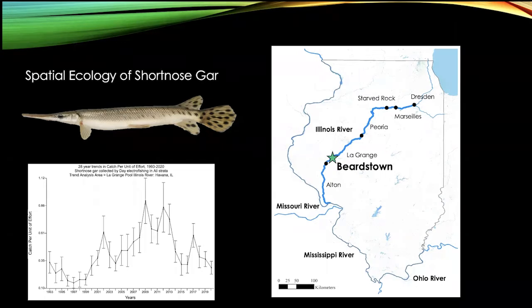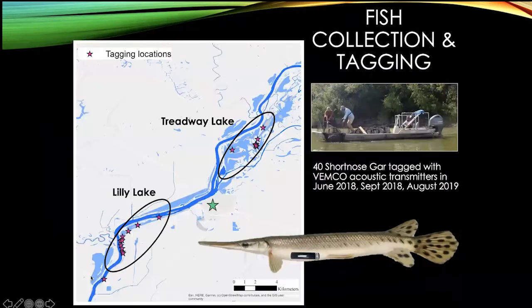To understand size structure and how anglers are capturing fish, it's important to understand population structure and the appropriate spatial scale for management. Are these isolated populations or a large panmictic population? Our acoustic telemetry study focused on the LaGrange reach between Beardstown and Havana, Illinois. We internally implanted acoustic telemetry tags in 40 gar in June, August, and September of 2018 and 2019 at two backwater complexes — Lily Lake and Treadway Lake — along the main channel of the Illinois River.